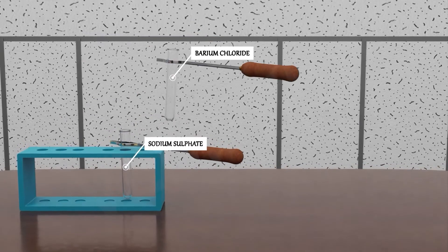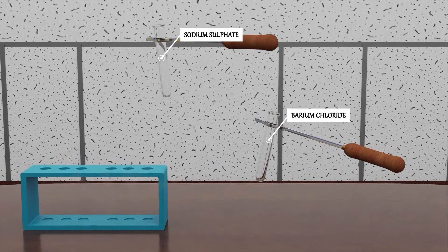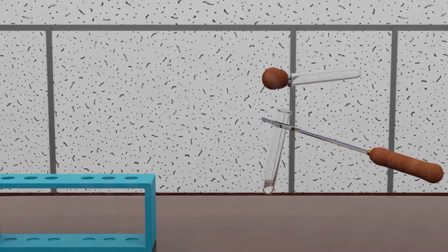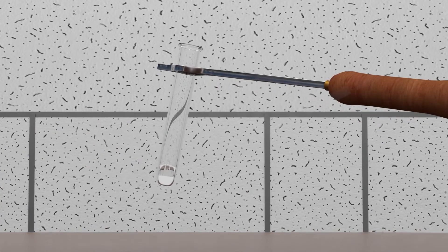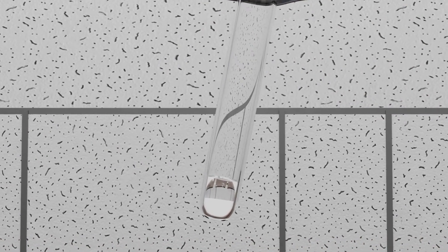Now mix these two solutions of barium chloride with sodium sulfate solution. Can you see what is happening? A white substance which is insoluble in water is formed.